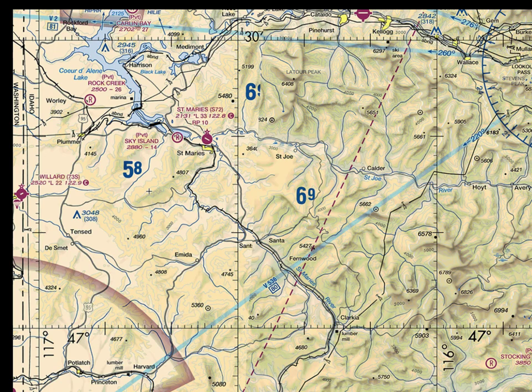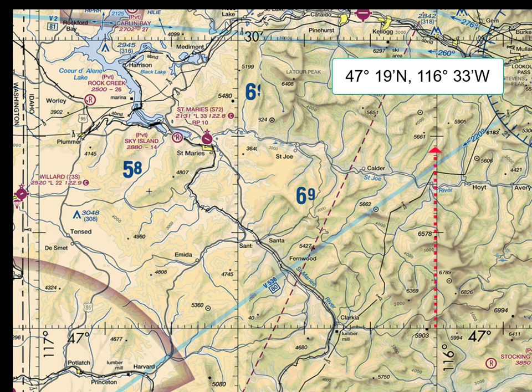Latitude values will increase as you go north or up on the map, and longitude values will increase as you go to the west or left on the map, because we're in the western hemisphere. So if you had a question on the FAA test asking what airport was at 47 degrees, 19 minutes north latitude, and 116 degrees, 33 minutes west longitude, you'd count the tick marks up from the 47-degree line until you got to 19 minutes. Then you'd count over from the 116-degree, 30-minute line to find that it's St. Mary's Airport.